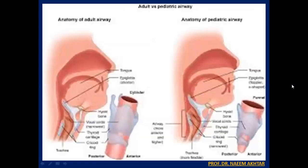You can see here that the adult larynx is cylindrical in shape, with a uniform lumen throughout. Whereas in the pediatric larynx, the upper part is wider and the lower part has a narrower lumen — so it is cone-shaped or funnel-shaped.